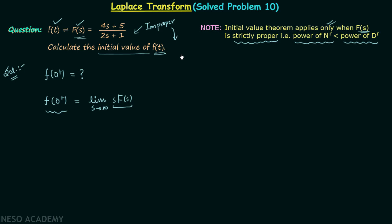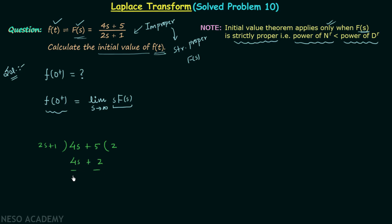To apply the initial value theorem we need to convert the improper F(s) to a strictly proper F(s). We will do this using the long division method. Dividing 4s + 5 by 2s + 1: multiply 2s + 1 by 2 to get 4s + 2, then subtract from 4s + 5. The 4s terms cancel and 5 minus 2 equals 3, so the remainder is 3.